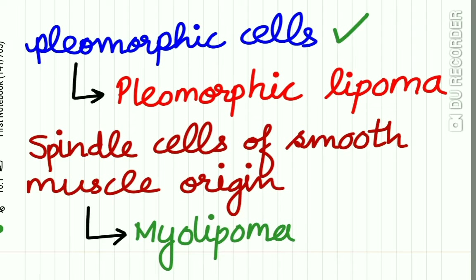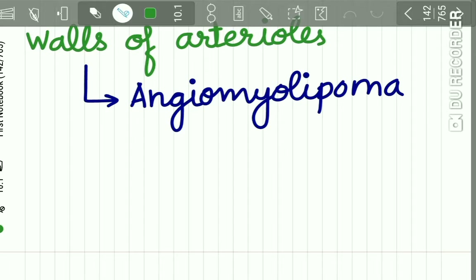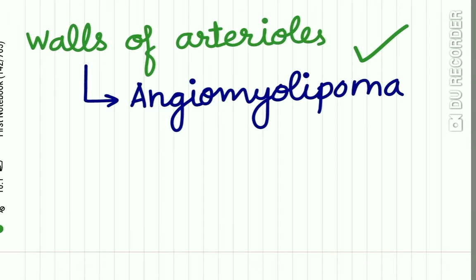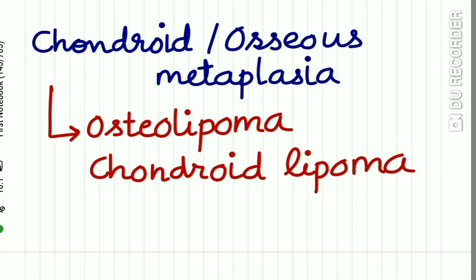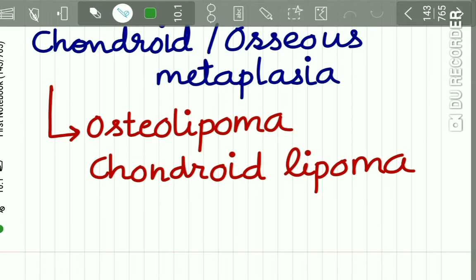Spindle-shaped cells give the term spindle cell lipoma. Pleomorphic cells give pleomorphic lipoma. If spindle cells of smooth muscle origin are seen, it is called myolipoma. If lipoma occurs from the walls of arterioles, it is called angiomyolipoma. If chondroid or osseous metaplasia is found in lipoma tissue, it is called osteolipoma or chondrolipoma.